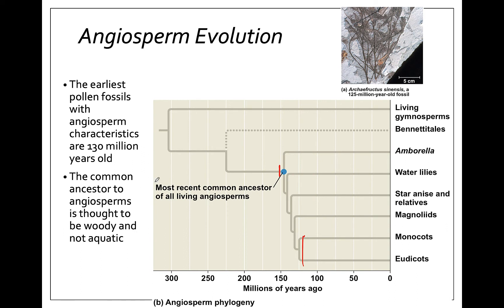We do think that the common ancestor of angiosperms was probably woody, meaning it was more like a tree and not an aquatic plant. You can see some of the groups coming off of the tree: we've got some basal angiosperms, the magnolids — which contain magnolias — and then our two largest groups, which are the monocots and the eudicots.